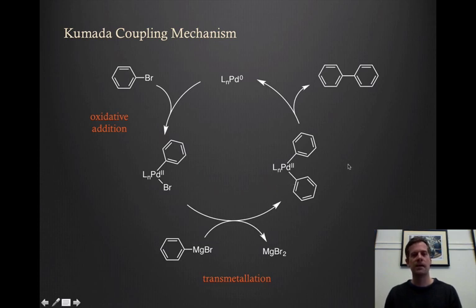The final step that needs to happen then is the reductive elimination, where we forge that carbon-carbon bond. That's our cross-coupling product. And because this is reductive, we go from palladium two back to palladium zero, and we're ready to start the cycle again. So it's a wonderful catalytic process, and it works quite efficiently.